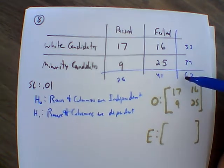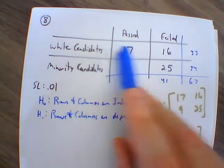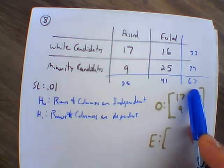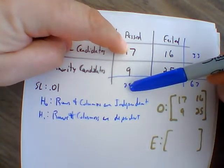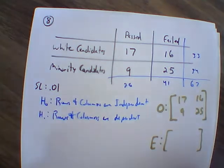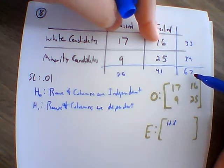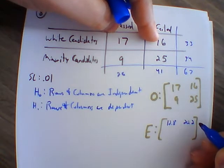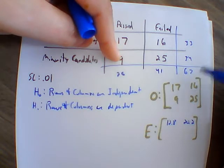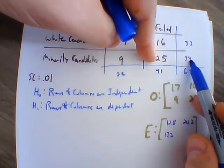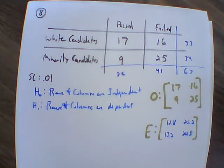So for each cell, we take row total times column total divided by 67. That gives us: 33 times 26 divided by 67 is 12.8; 33 times 41 divided by 67 is 20.2; 34 times 26 divided by 67 is 13.2; and 41 times 34 divided by 67 is 20.8. So this is our expected matrix.